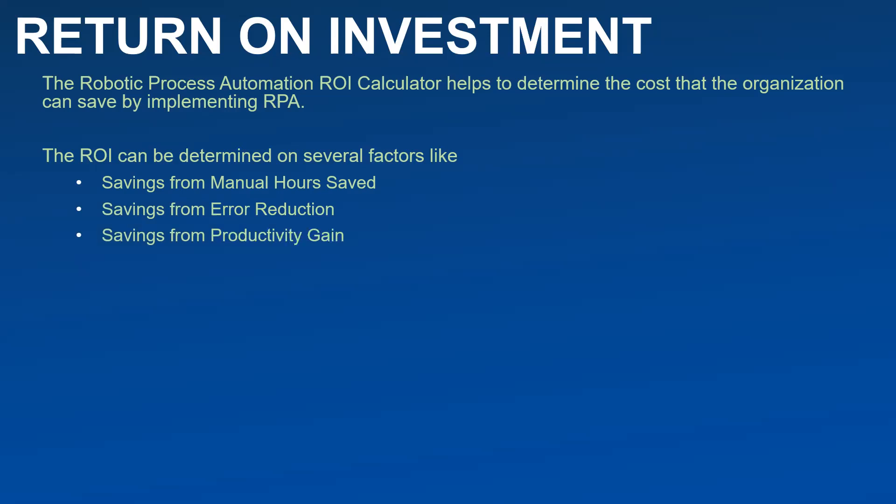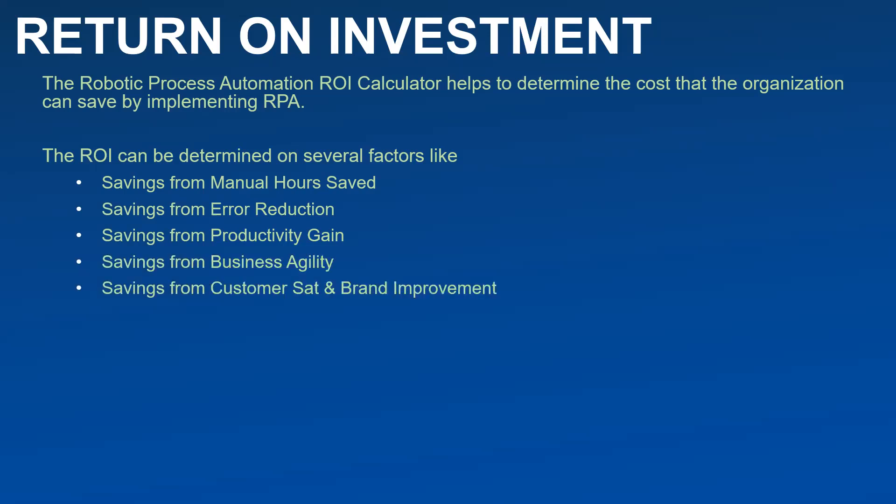Then we have savings from productivity gain — throughput can be improved with the help of a robot and the productivity gain can be evident. Then savings from business agility, savings from customer satisfaction and brand improvement, and savings in terms of improved compliance and data governance. Every process comes with compliance requirements and penalties attached, which can certainly be one aspect of seeing the savings from investment in RPA.